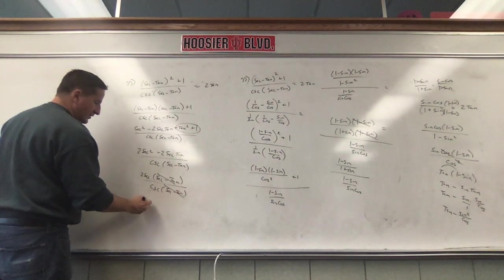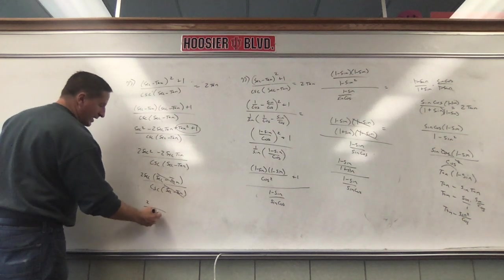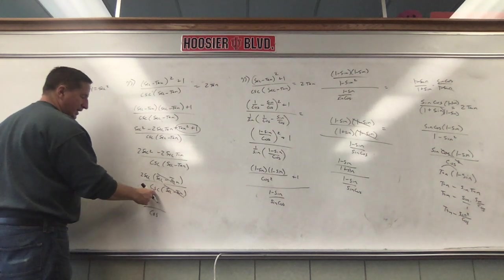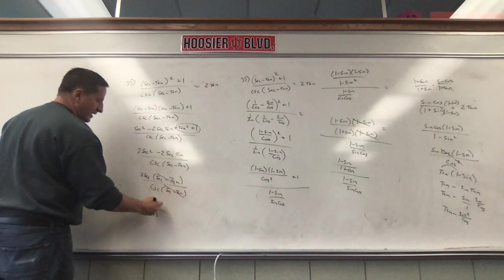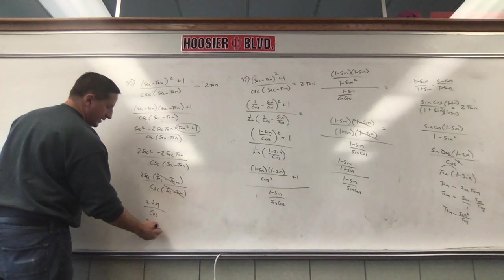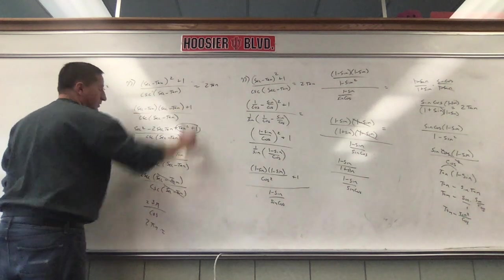Secant on top is the same as cosine on the bottom. Cosecant on the bottom is the same as sine on top. Sine over cosine is tangent. Two tangent equals two tangent.